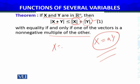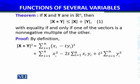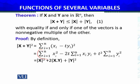Let's prove this. In the proof, we take X with components X_i for i = 1, 2, up to N, and Y with components Y_i — both bold X and bold Y belonging to R^N. By definition, |X + Y|² equals the expanded form. Opening the square, this gives us |X|² plus two times X dot Y plus |Y|².